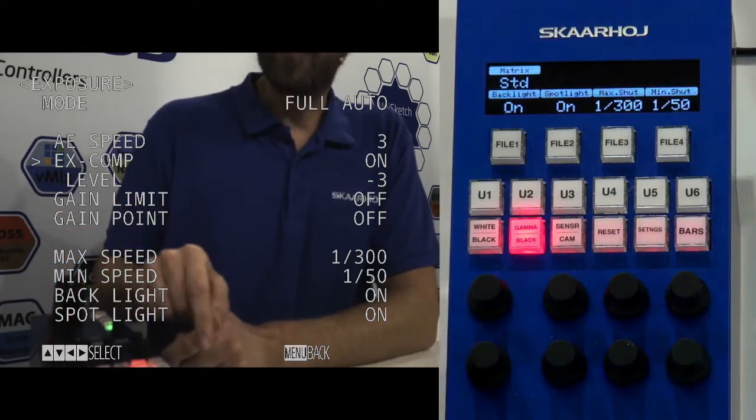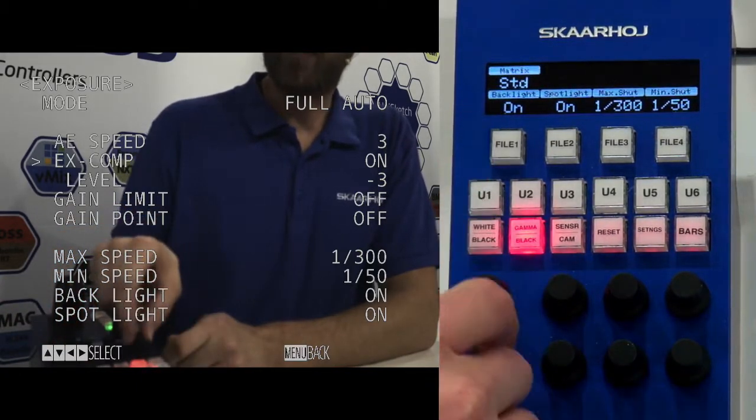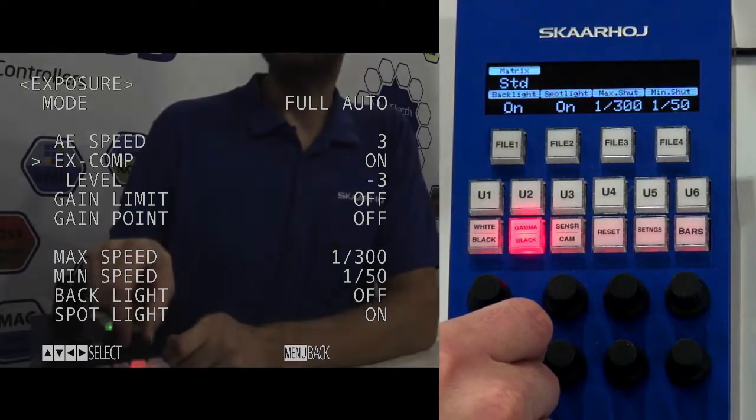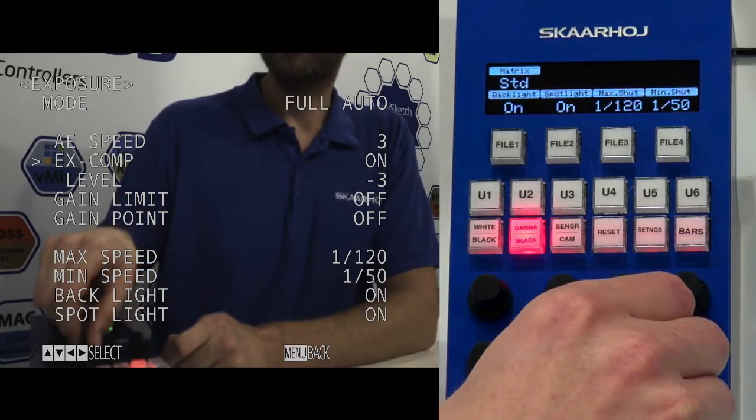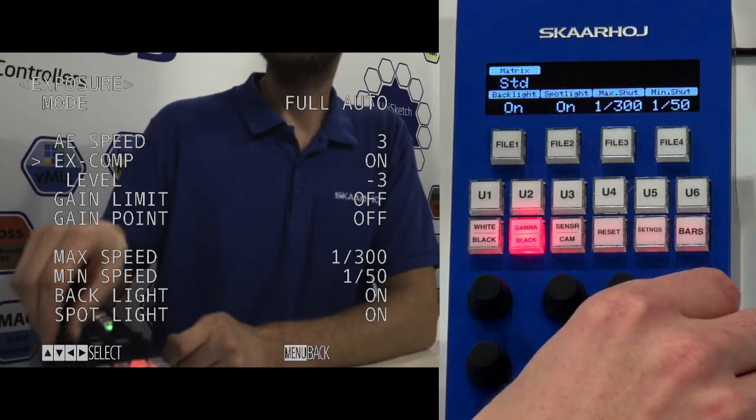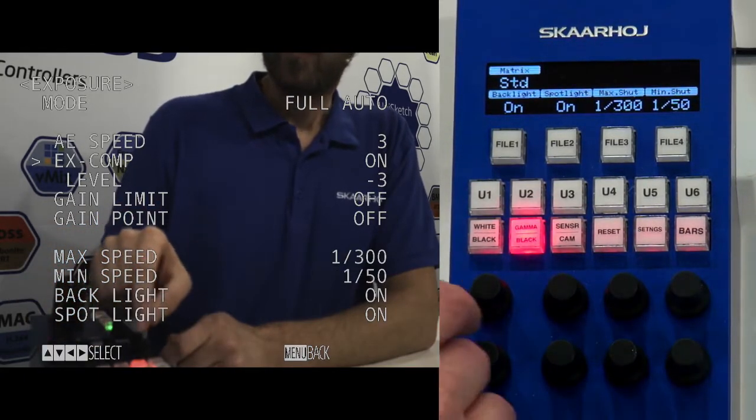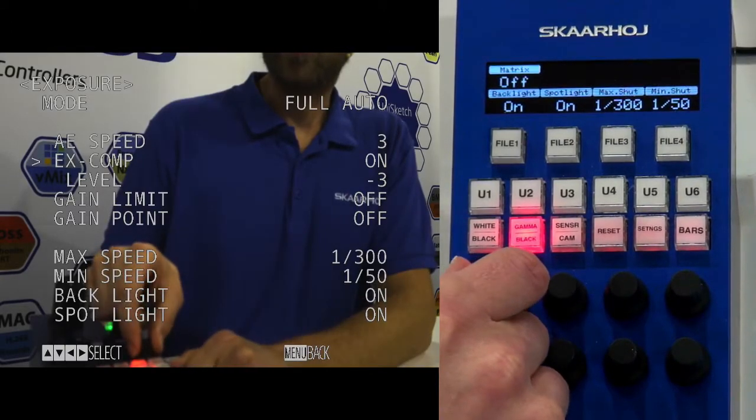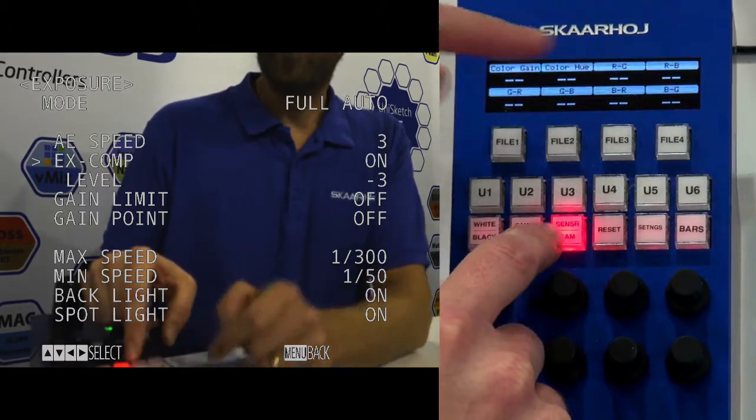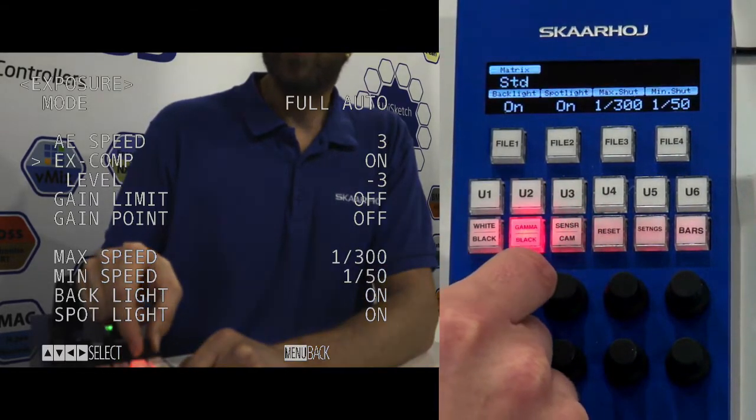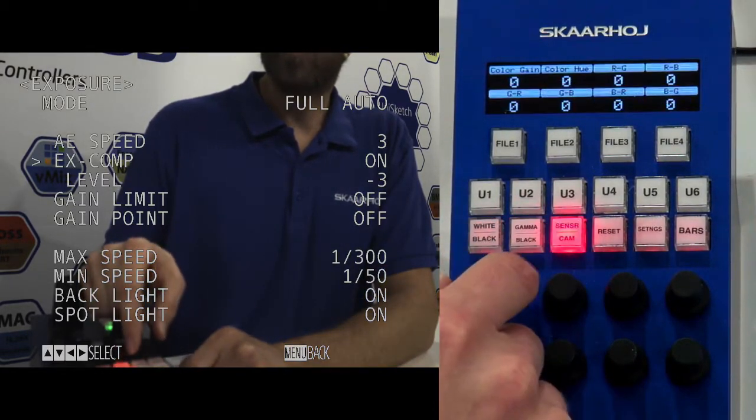We have backlight on and off. We have max shutter speed. That's a feature of this camera. We also have the matrix set to standard. Now I turn it off. On the next page here, we have all the matrix settings. When I turned it off, you just don't see those settings anymore.